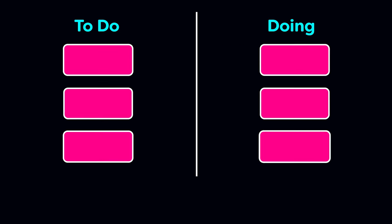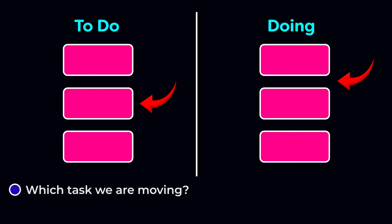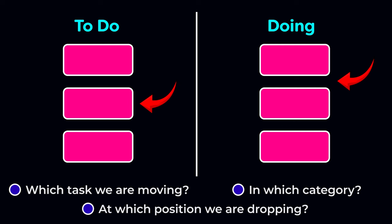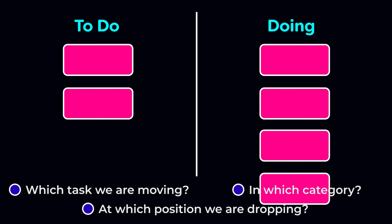Suppose we have a list of tasks divided into two categories — to-do and doing — and we arrange them by priority order. We can also work on multiple tasks at the same time. Now suppose we want to move the second to-do task to the doing list at the second priority. What details do we need? First, which task we are moving. Second, which category we're putting it in. Third, at which position. Then we simply move the task to that category and position.